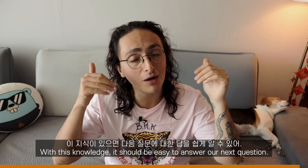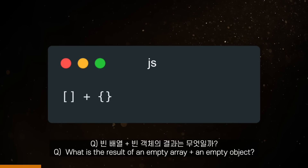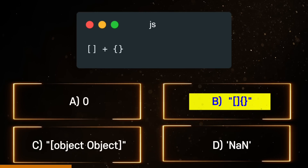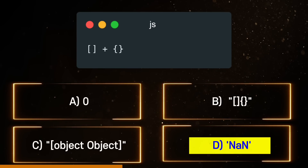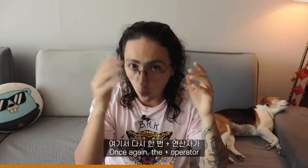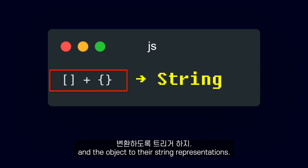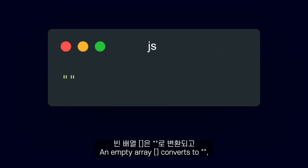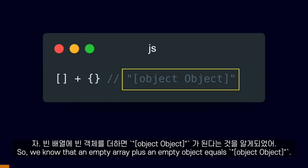With this knowledge, it should be easy to know the answer to our next question. What is the result of an empty array plus an empty object? A, 0. B, empty array and empty object as a string. C, '[object Object]'. D, not a number. And the answer is C. Here, once again, the plus operator triggers the conversion of both array and object to their string representations. An empty array converts to an empty string, and an empty object converts to '[object Object]'. So empty array plus empty object equals '[object Object]'.